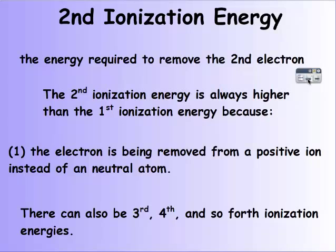Second ionization energy is the energy required to remove the second electron. The second ionization energy is always greater than the first ionization energy because the electron being removed will be from a positive ion instead of a neutral atom. A positive ion has more protons than electrons, which pulls the electrons in tighter, making it harder to remove them. We can also have third, fourth, and so on ionization energies for successive electrons being removed.